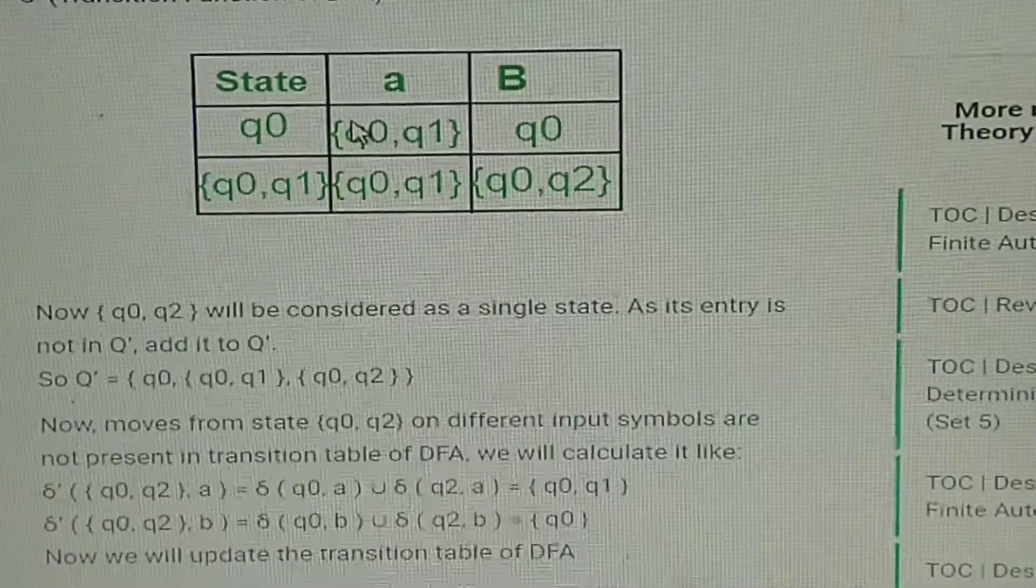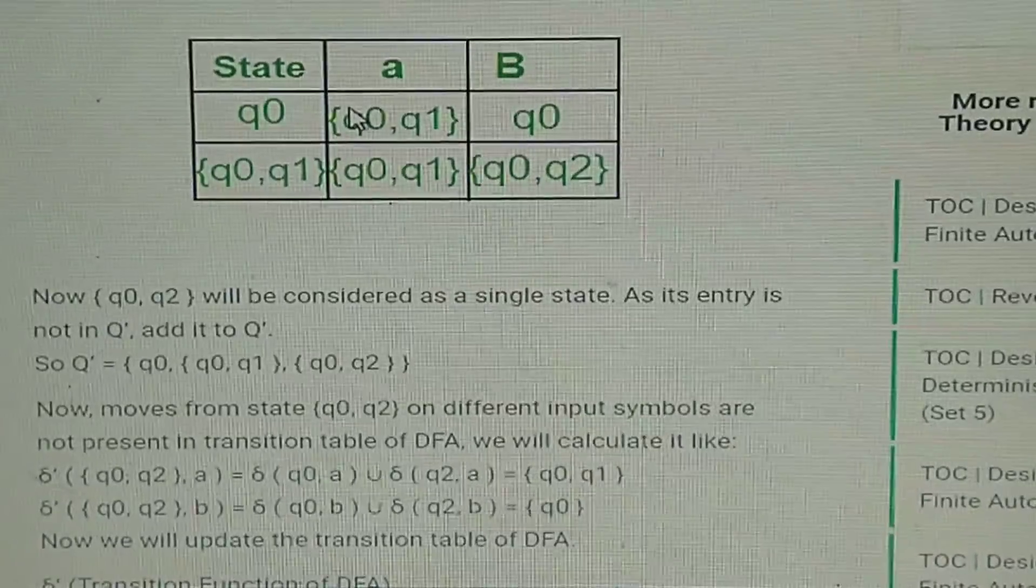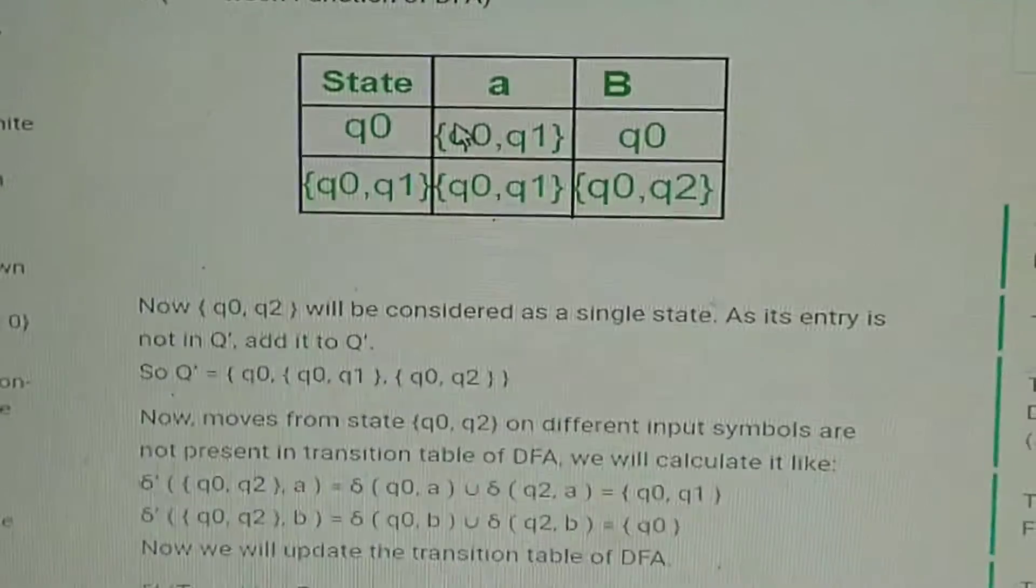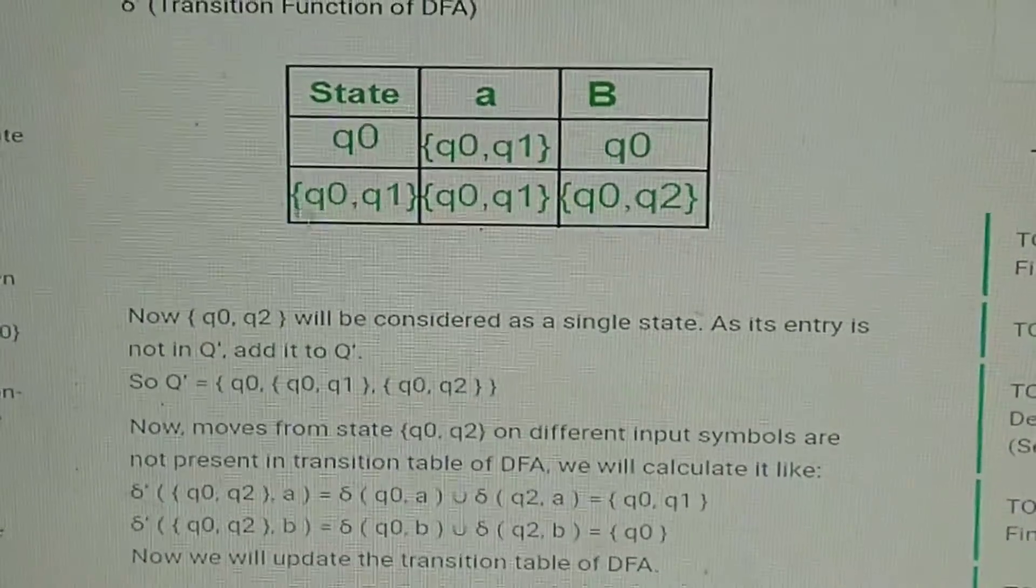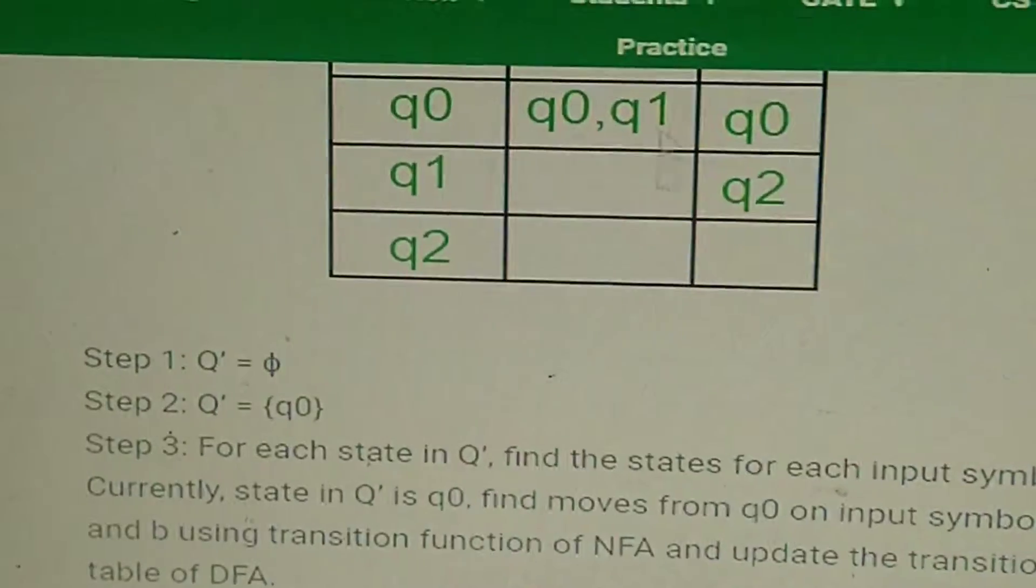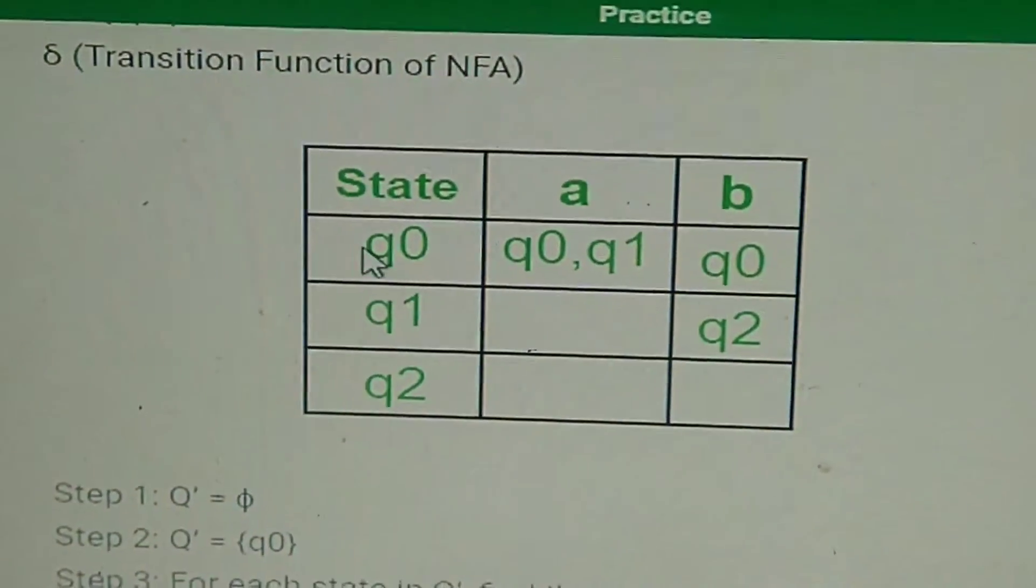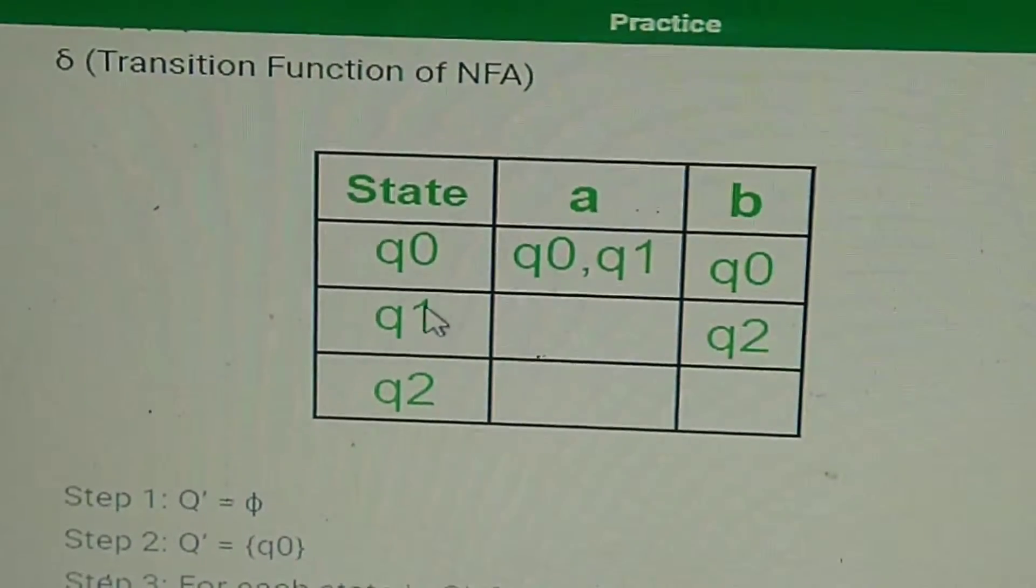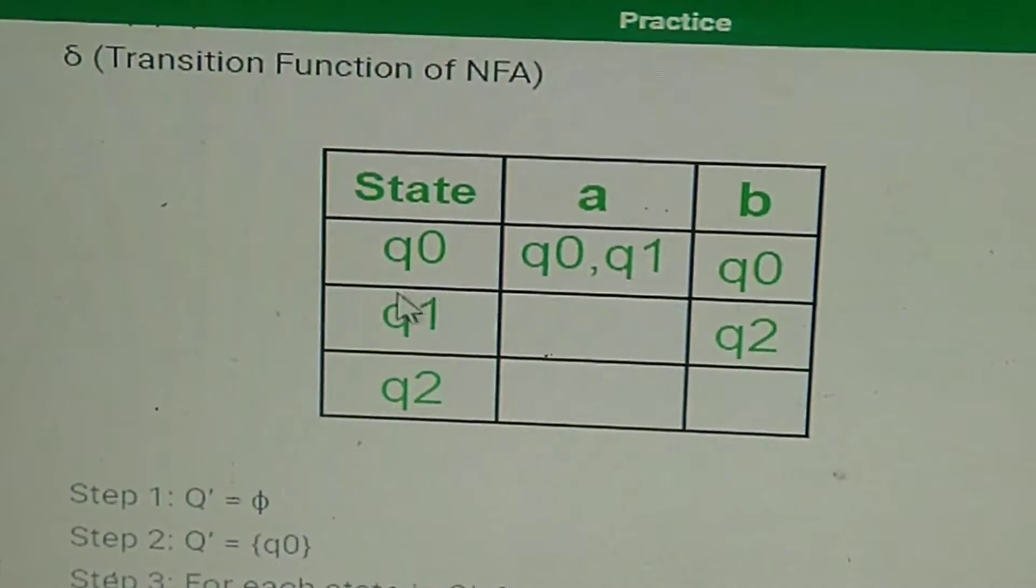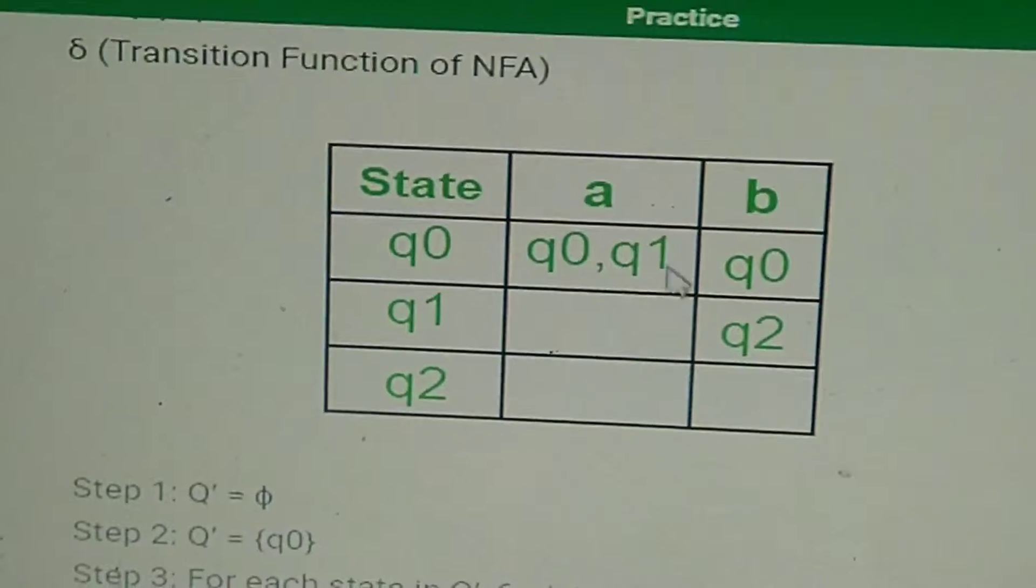So what you will do is define this state in the next step. Just write this state here: q0 and q1. Now how you will define this comes very important. You just go back to the previous table. Your new state was q0,q1. So on giving 'a' to q0, what you get is q0,q1. On giving 'a' to q1, what you get is nothing. So the union of both will be again q0,q1.